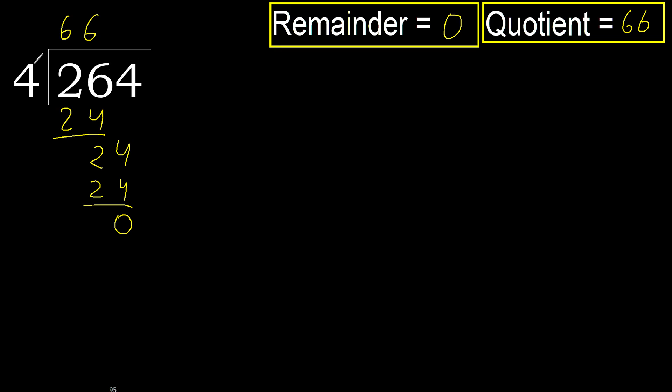264 divided by 4 is 66. Ok: 274 divided by 56, 324 divided by 56, 336 divided by 55, 337 divided by 76, 337 divided by 25.